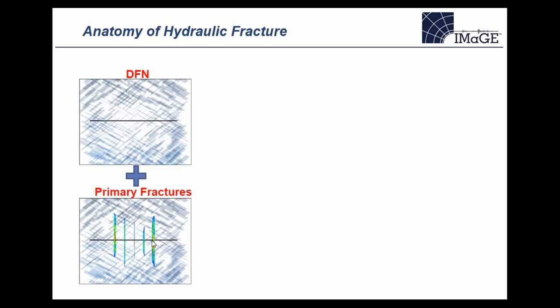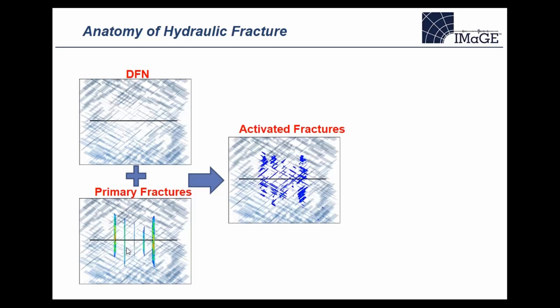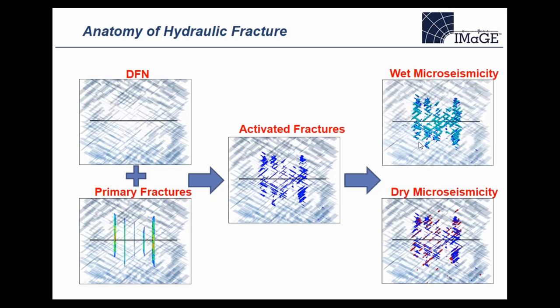That pressurized, opening, dilating primary fracture will then activate pre-existing fractures, causing them to move — and those movements are what we pick up from microseismic. We've tried to differentiate between pressure-activated and stress-activated events. What microseismic is showing us, regardless of mechanism, is the activation of the DFN — the discrete fracture network — which are the leaves on the tree. Keep in mind there's still a plumbing system that's aseismic, not generating seismic activity.